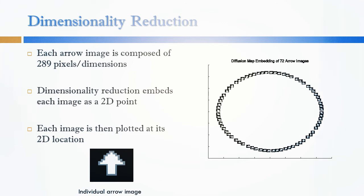In essence, dimensionality reduction takes a large number of variables, in this case pixels, and reduces them down to a lower number of dimensions which explains the underlying relationship between them.